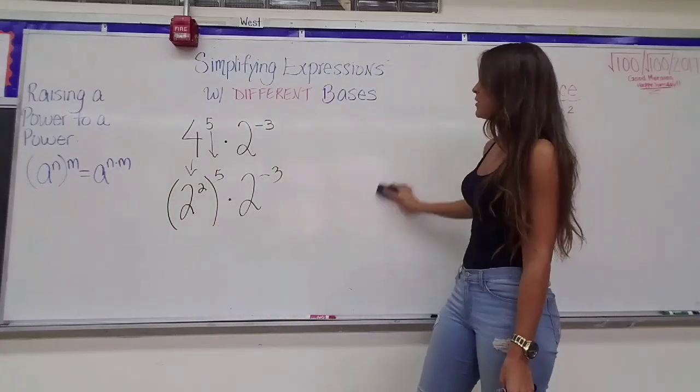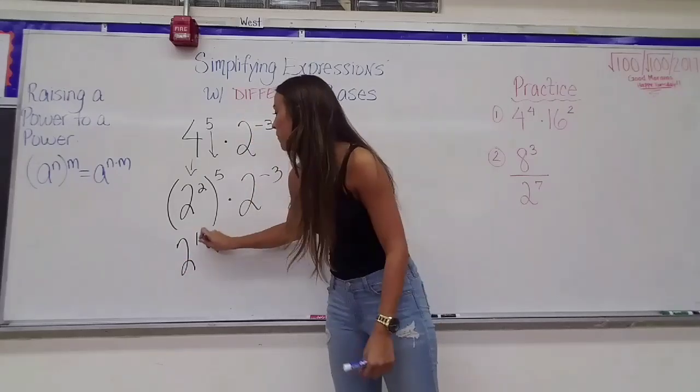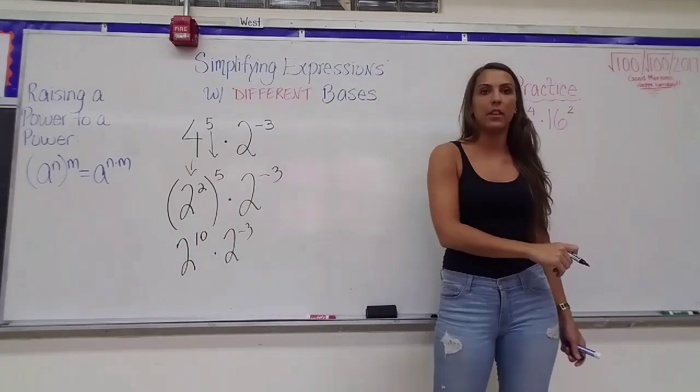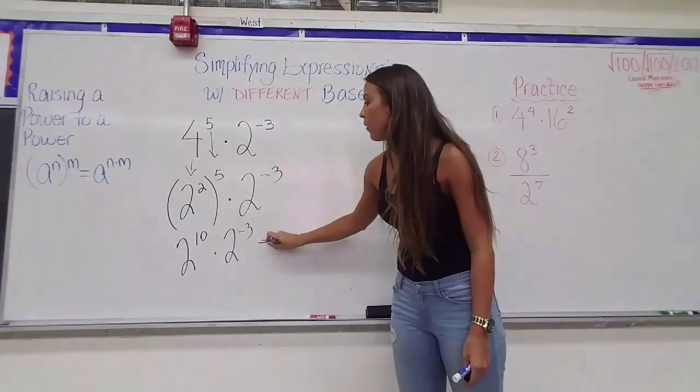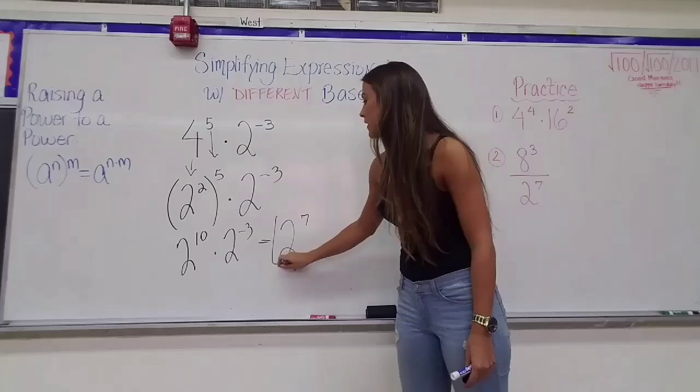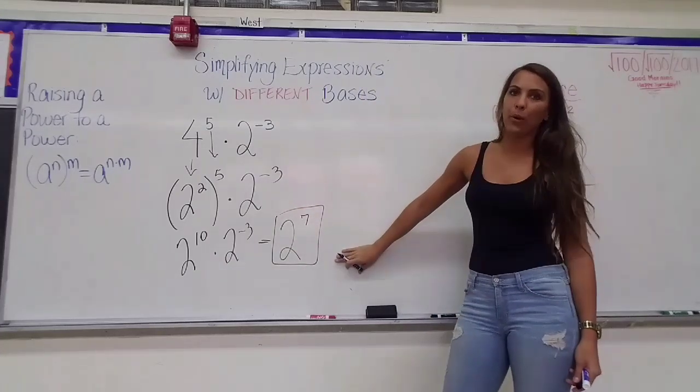So 2 to the 2 to the 5th turns into 2 to the 10th power. So now 2 to the 10th power being multiplied by 2 to the negative 3rd power. And now I can keep my base and add my exponents, 10 plus negative 3 to get 7. So all of this simplifies to 2 to the 7th power.